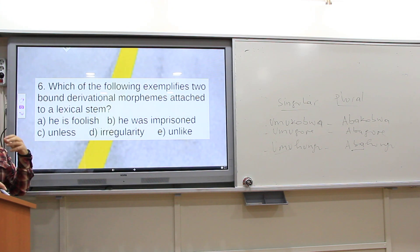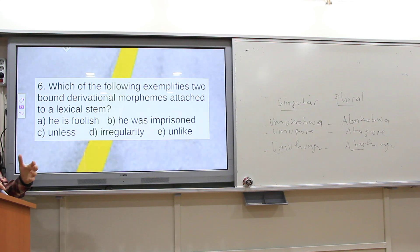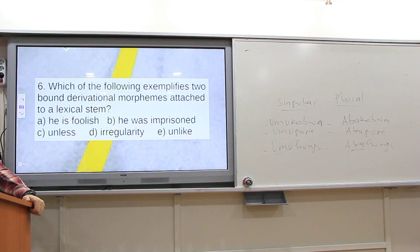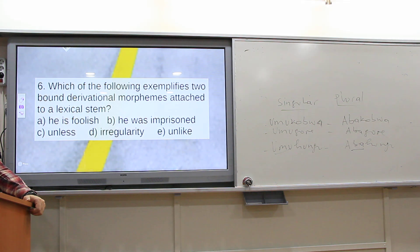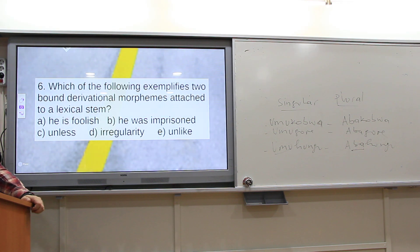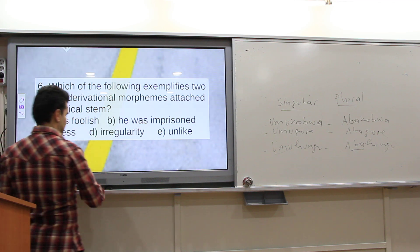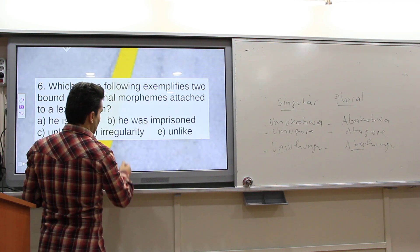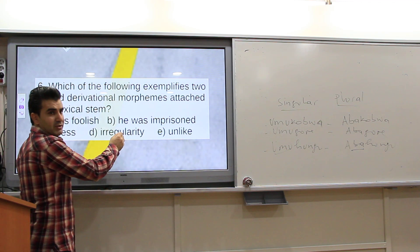Take 'prison' → 'imprison.' When you add 'im-' you make it a verb — you change its category. So that means it is derivational. That confirms 'irregularity' has the most bound morphemes.